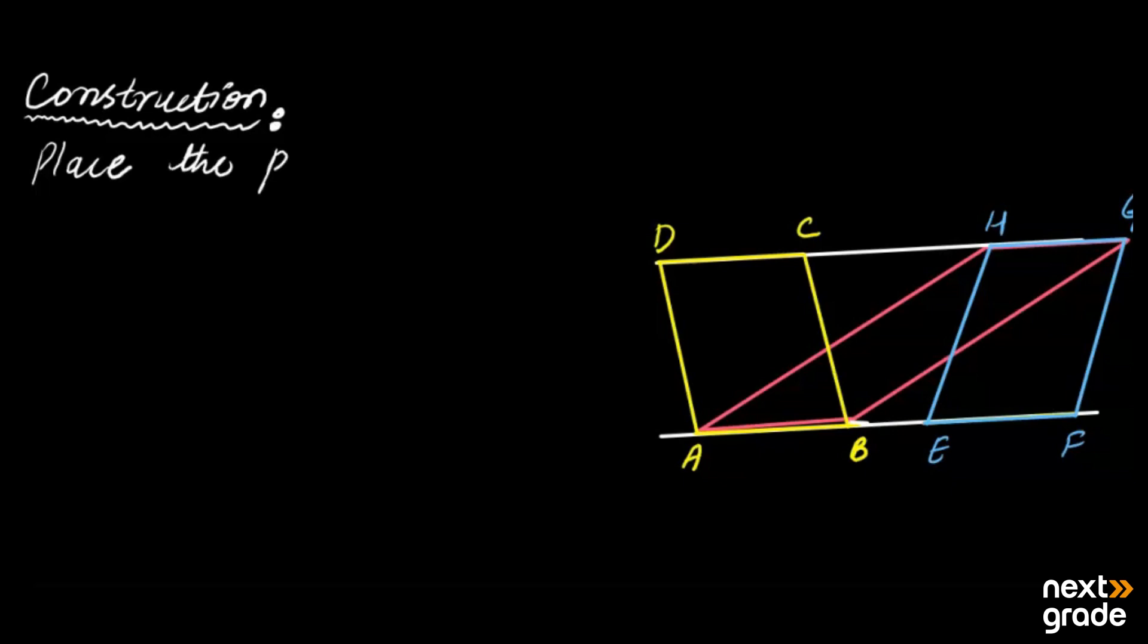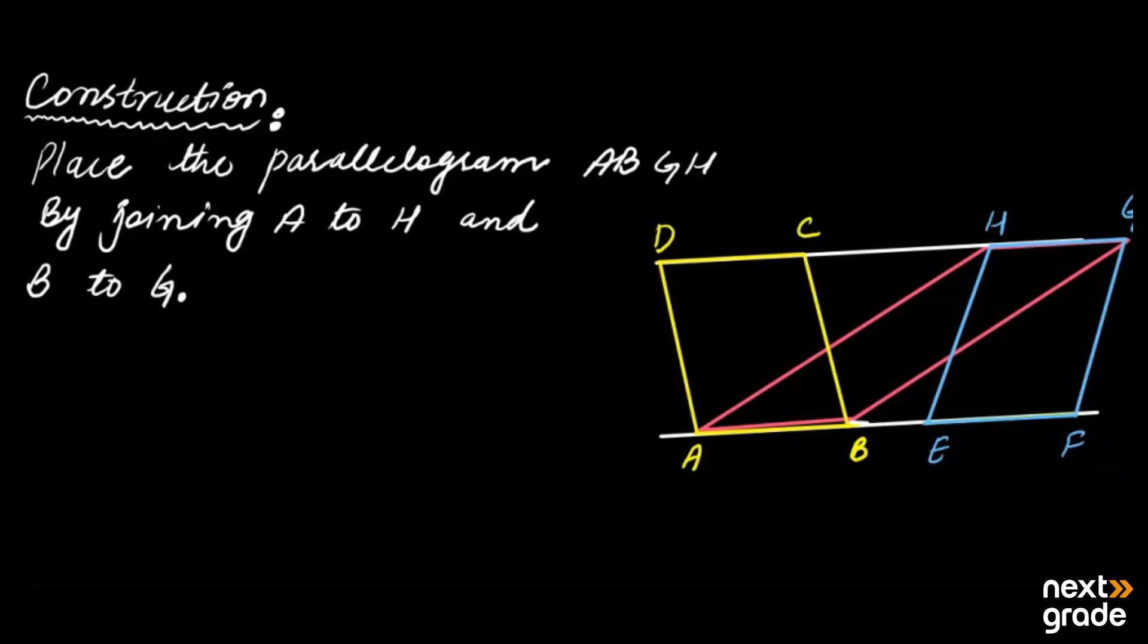Here, construction. Place the parallelogram, and this parallelogram can name the character ABGH. Okay, by joining A to H and B to G. Okay.